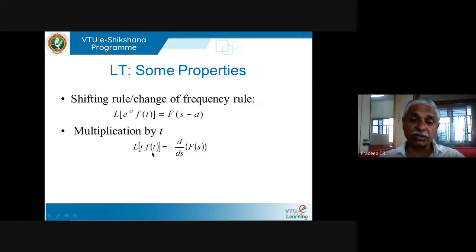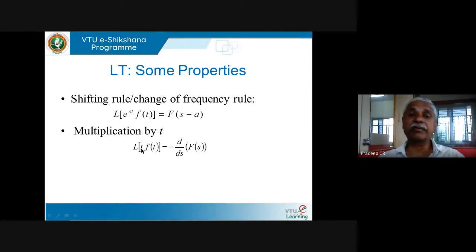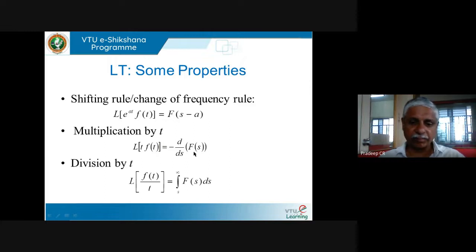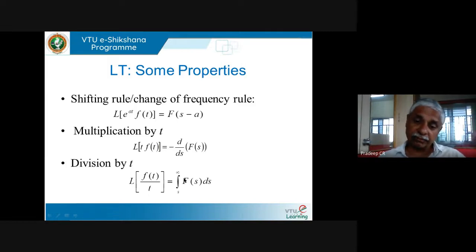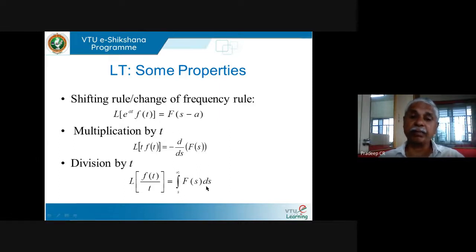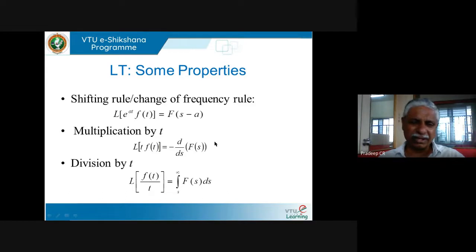L{t·f(t)} = −d/ds [F(s)]. So if you know the Laplace transform of f(t), you can find the Laplace transform of t·f(t) by taking the negative derivative of F(s) with respect to s. Similarly, for division by t: L{f(t)/t} = ∫_s^∞ F(s) ds. These are three very important properties; a fourth rule is rarely asked in exams and I will skip it.